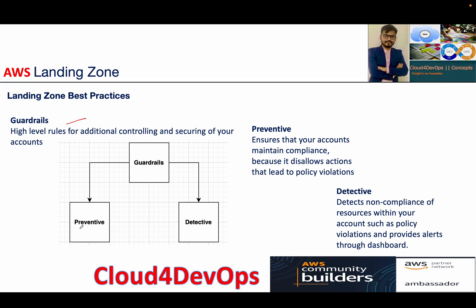Preventive and detective are the two sets of guardrails. Preventive basically ensures the compliance of your account because it disallows actions that lead to policy violation — if any kind of policy violation is happening, it will disallow that action. Detective, on the other hand, detects the non-compliance activity of your resources such as policy violation, with the additional factor that you get an alert to the dashboard. That's what guardrails in general are all about, protecting your member accounts as part of your landing zone best practices.